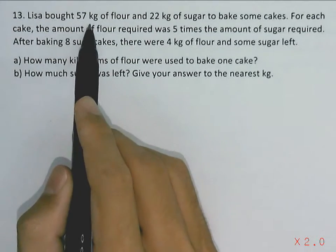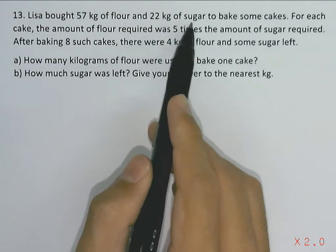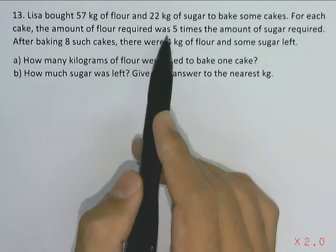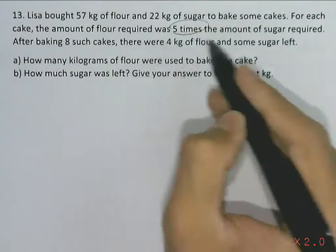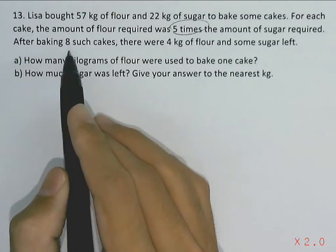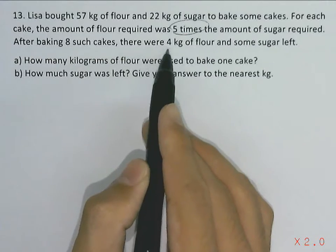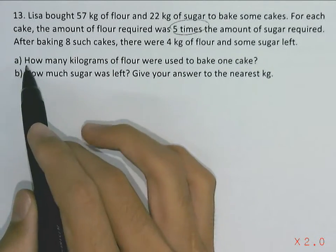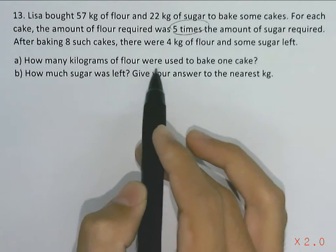Lisa bought 57 kilograms of flour and 22 kilograms of sugar to bake some cakes. For each cake, the amount of flour used was five times the amount of sugar required. After baking eight such cakes, there were four kilograms of flour and some sugar left. Part (a) is asking how many kilograms of flour were used to bake one cake.